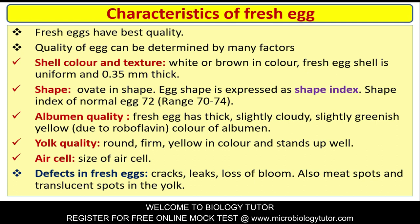Characteristics of fresh egg: Fresh eggs have the best quality. Quality of egg can be determined by many factors like shell color and texture - usually white or brown in color. Fresh egg shell is uniform and 0.35 mm thick. Egg shape is expressed as shape index. The shape index of a normal egg is 72, with a usual range of 70 to 74.